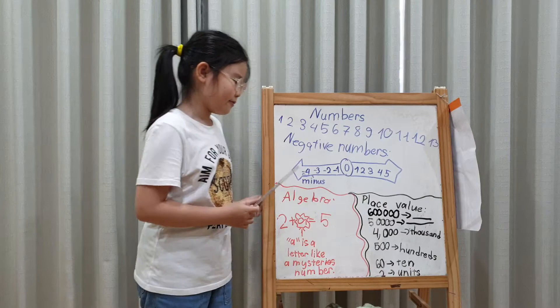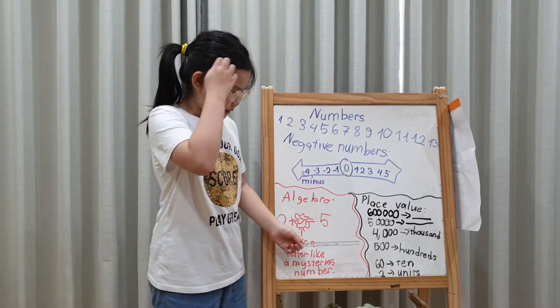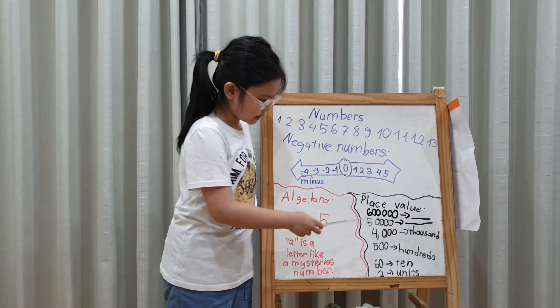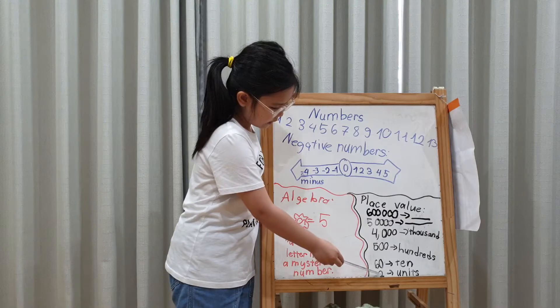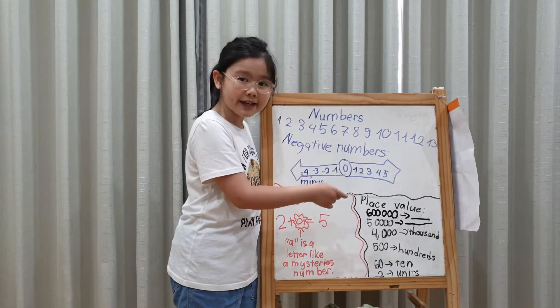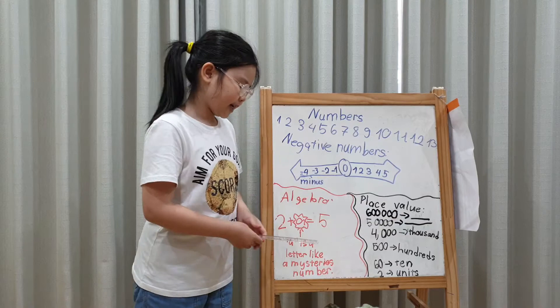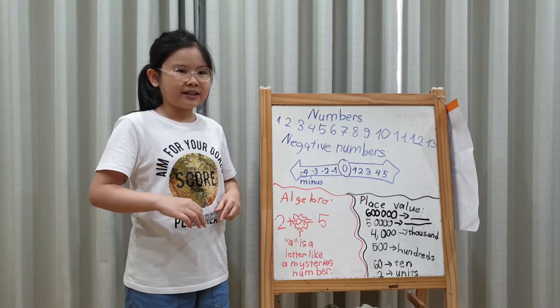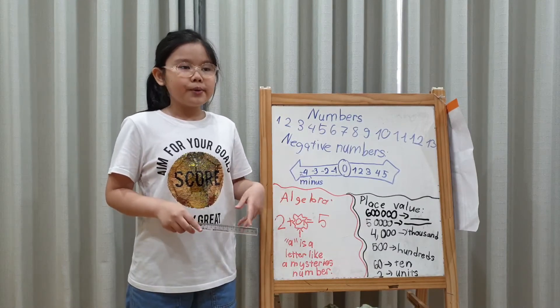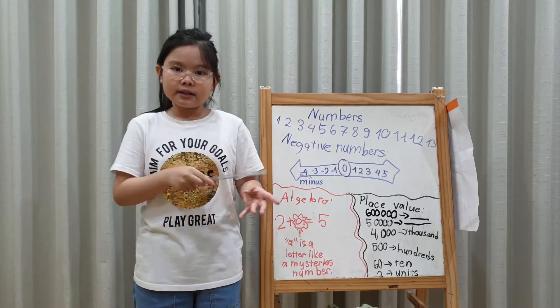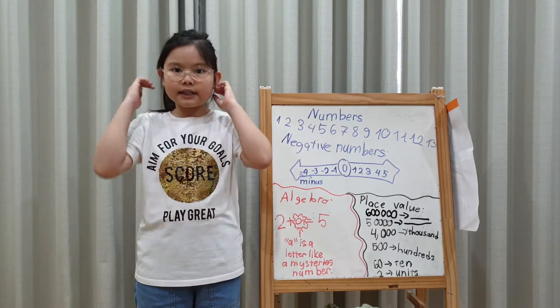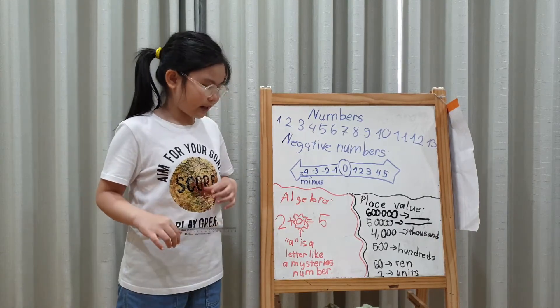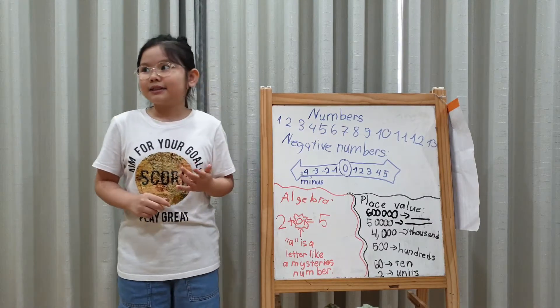Now, turn to place value. Here, I have many numbers. But I write this, the smallest to the biggest. Okay. Start with two. Two is the units. Units like twenty-two. Two is standing besides the two. Do I need to explain some more? If all you have know it.